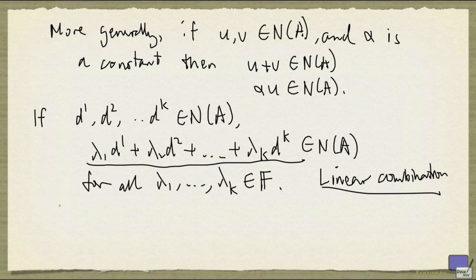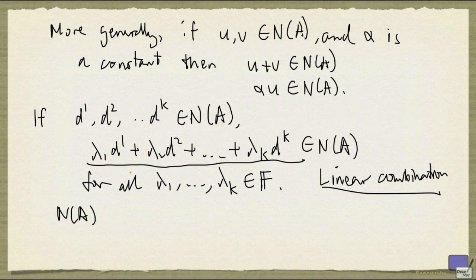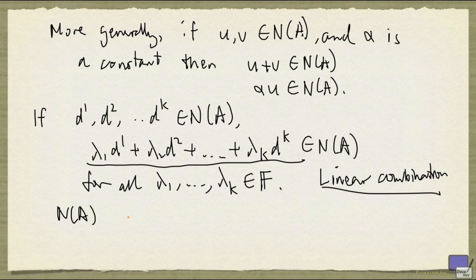Using row reduction, we can find a finite number of tuples d1 up to dk in N(A), such that N(A) is given by the set of all linear combinations of d1 up to dk. The way we obtain this d1 up to dk is, you look at your free variables. For each free variable, you're going to get one parameter. And for each parameter, it will be associated with a tuple that is a solution to Ax equal to 0. So we can always write N(A) as a linear combination of some k tuples, where k would be the number of free variables after you row reduce A to a matrix in reduced row echelon form.